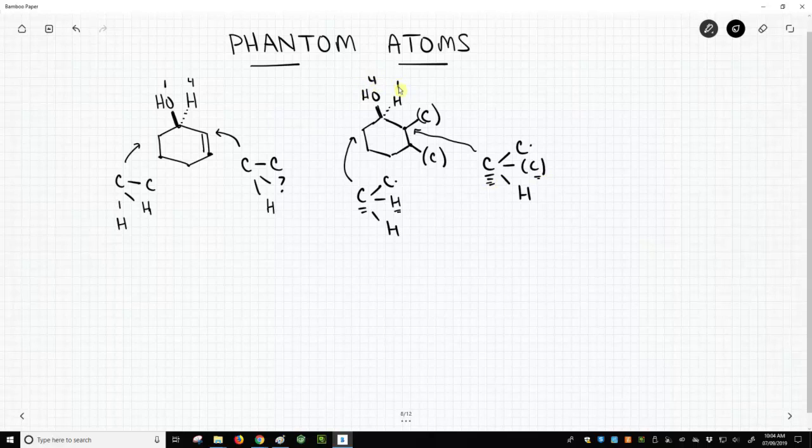So we'd say the oxygen is one, the hydrogen is four, this carbon on the right is two, that one's three, so this would be one, two, three. That's clockwise. This stereocenter would have the R configuration, so we use phantom atoms as temporary placeholders so we can apply Cahn-Ingold-Prelog rules.